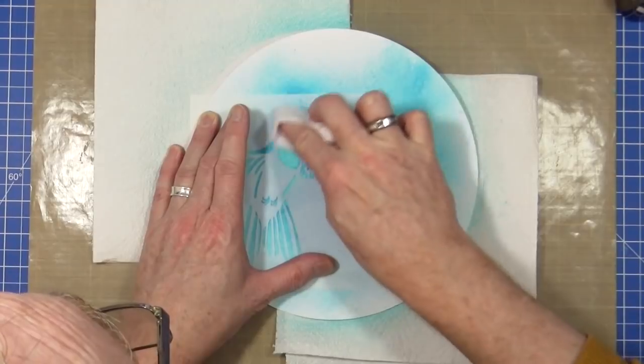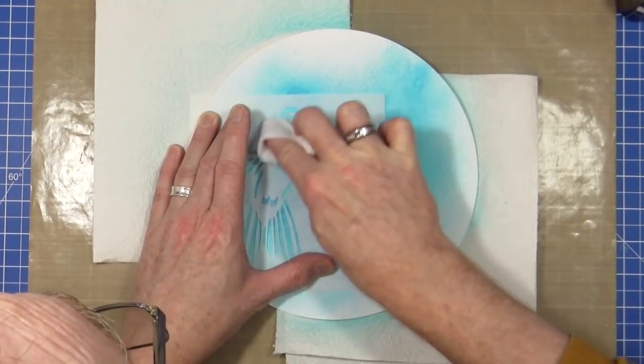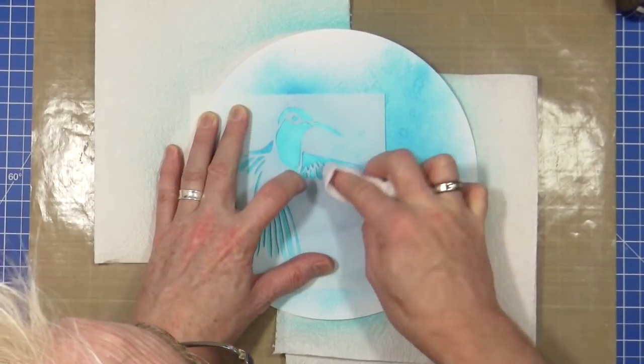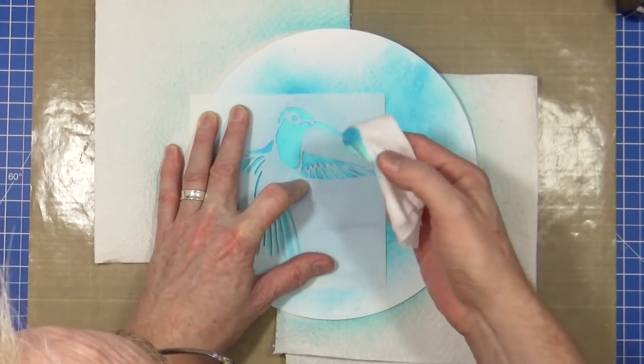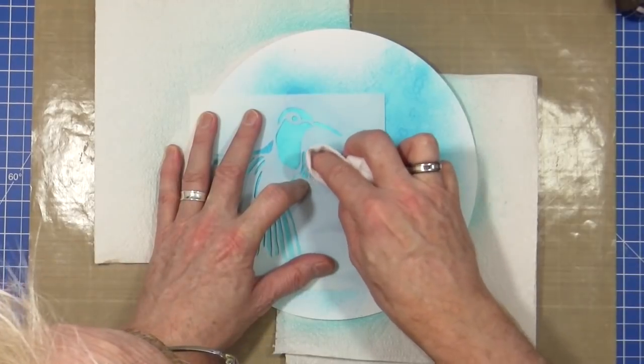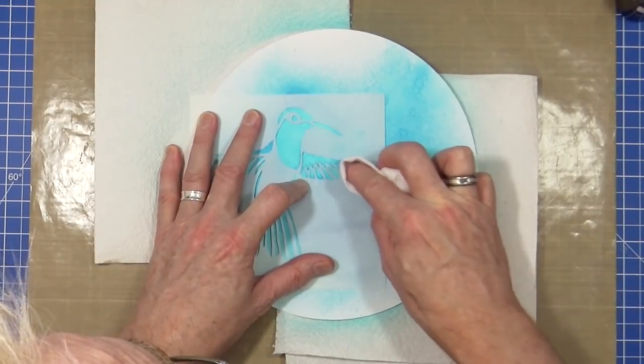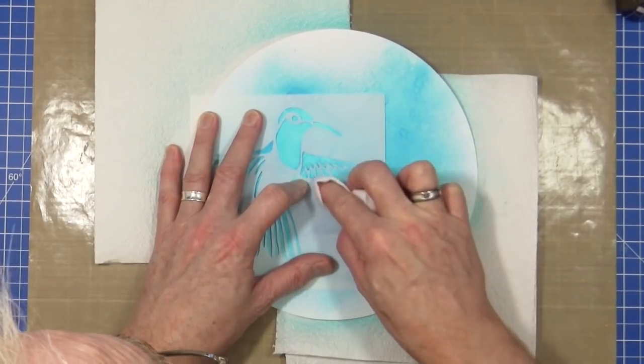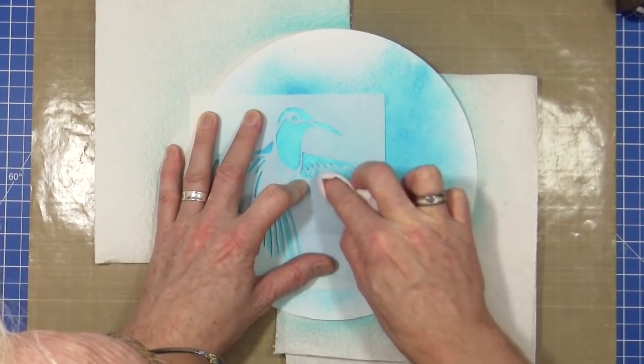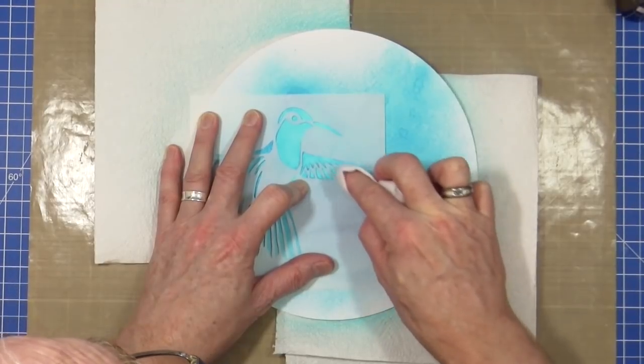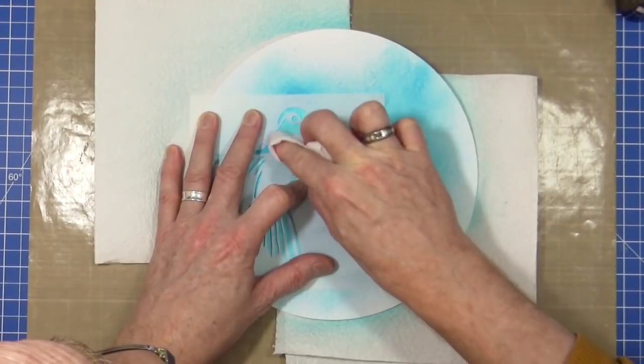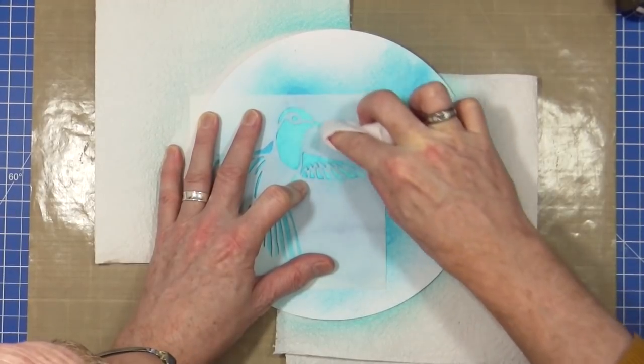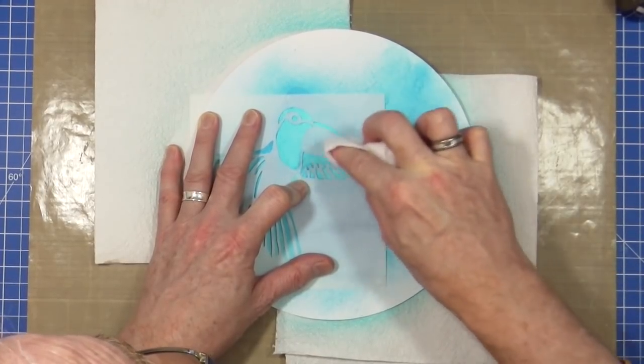And I'm just going to double up on the baby wipe, just wrap it around my finger, and I'm just going to gently go around and remove that colour that I've already put down. Create some lighter points in that background, and I'm just going to go very gently.